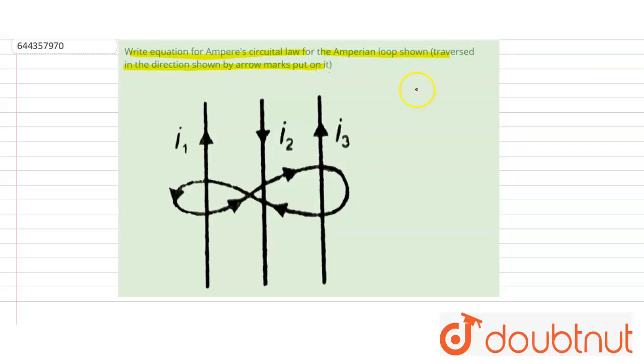First of all, what is Ampere's law? Ampere's law is closed integral B dot dl equal to mu not i closed. Here i is the current enclosed by the Ampereian loop.